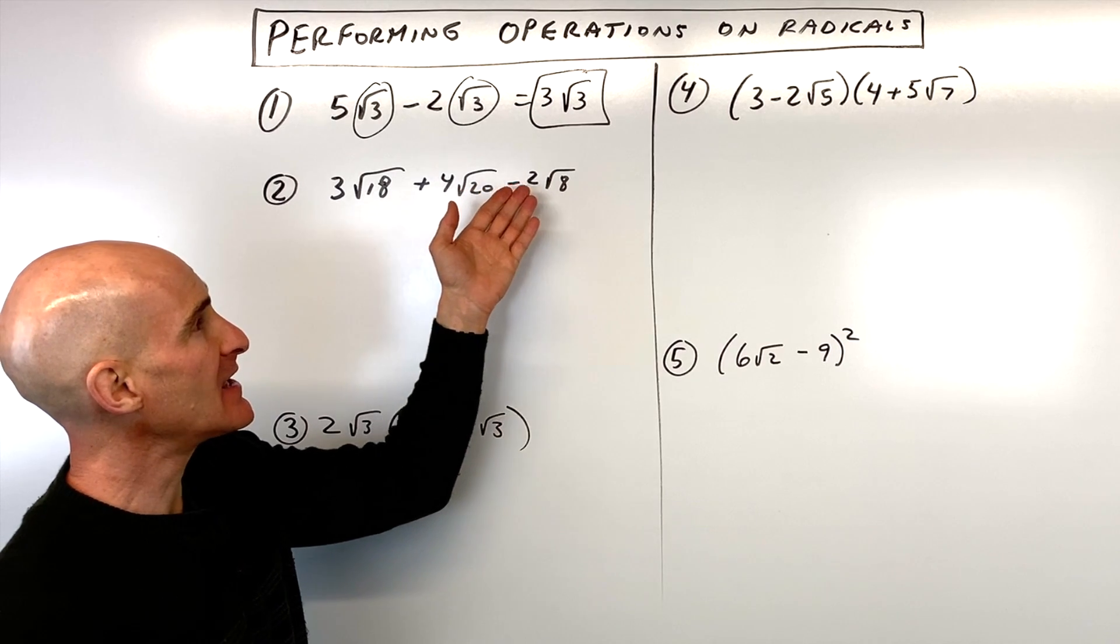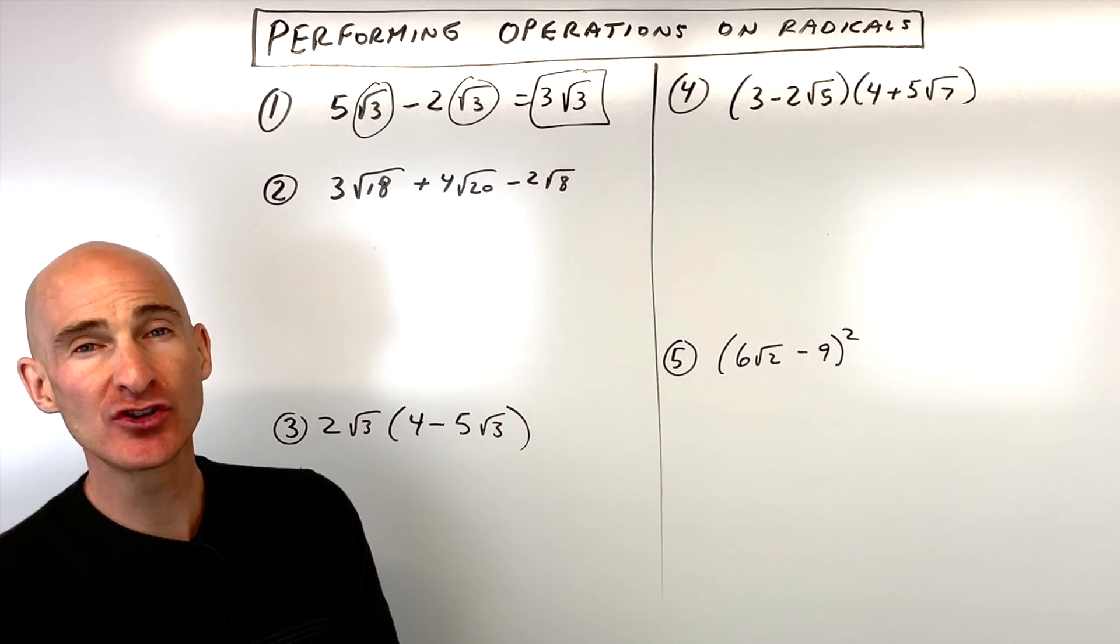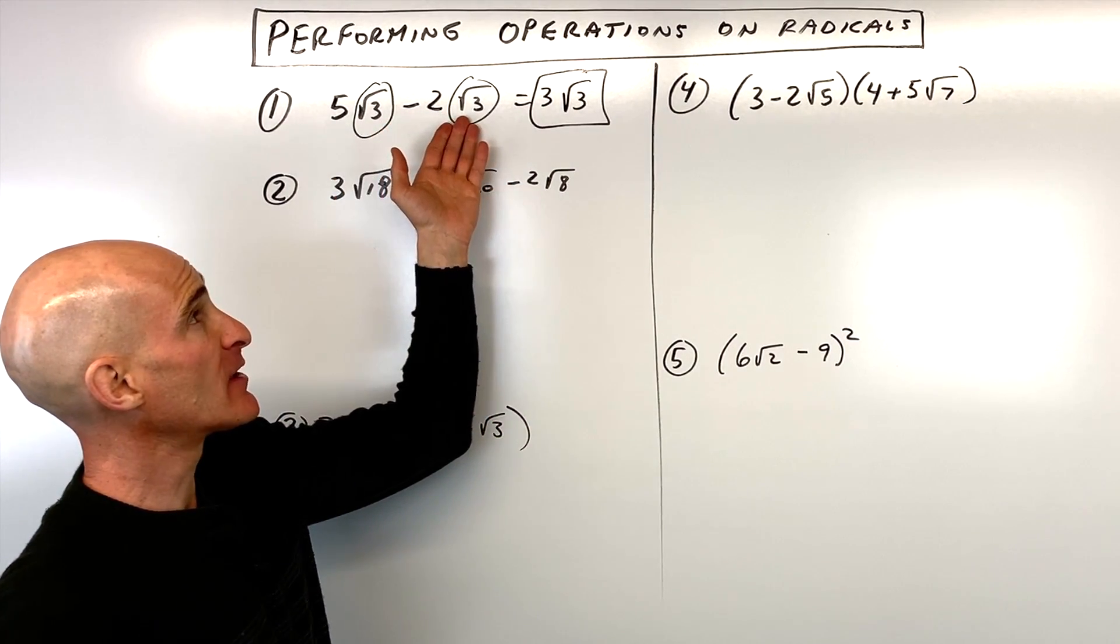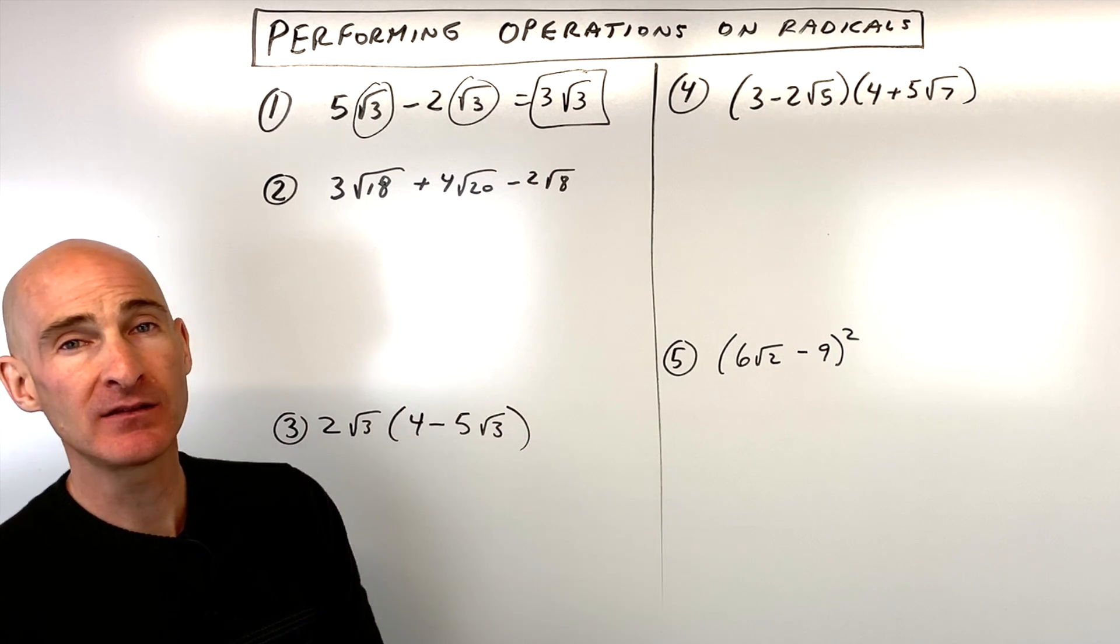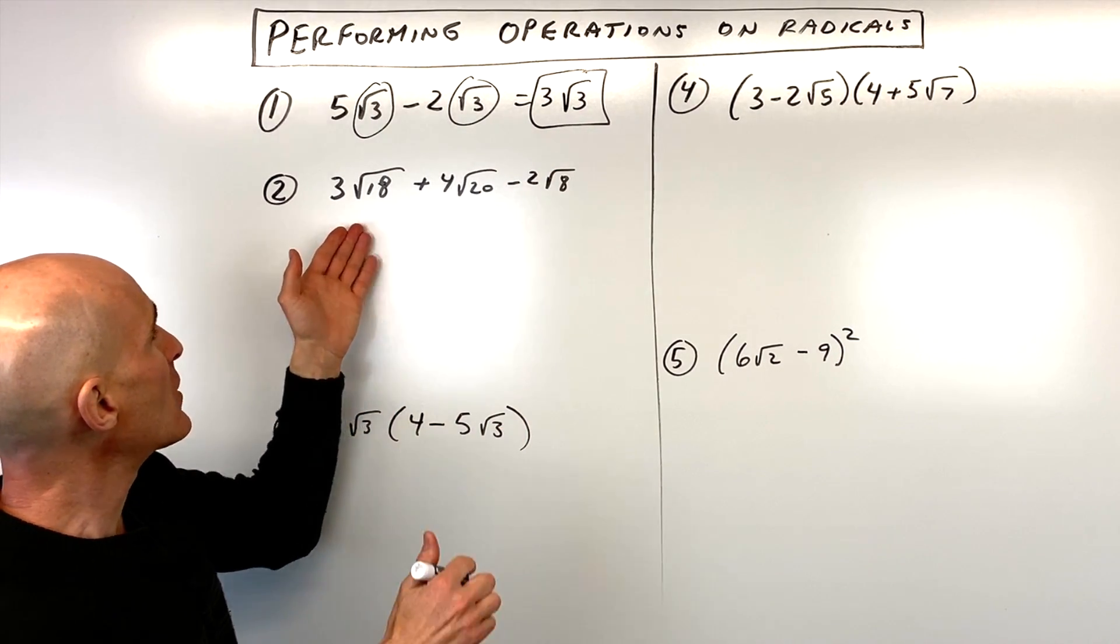Well, the first thing you want to do is try to simplify each of the radicals as much as you can individually, then see if they have something in common like we had in this first problem, and then combine the like radicals. So, for number two,